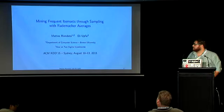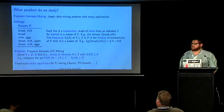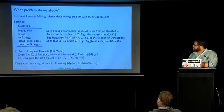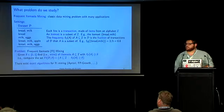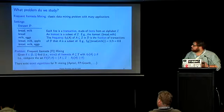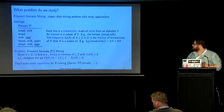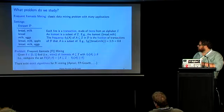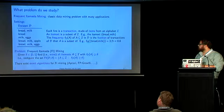We study the problem of frequent itemset mining, which is a very classical problem in data mining that has tons of applications. The setting is the following: we have a dataset of transactions — each line is a transaction, think of it as the products that grocery store customers buy. The transactions are made of items that come from some alphabet. An itemset is just a subset of the alphabet, so for example bread and milk is an itemset. The key concept is the frequency of an itemset in the dataset, which is basically the fraction of transactions that contain that itemset. For example, bread and milk appears in the first, fourth, and fifth transaction, so its frequency is 3 over 5, that is 0.6.